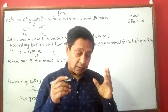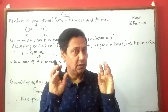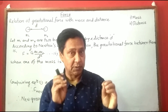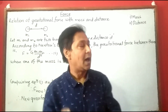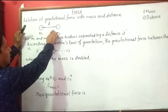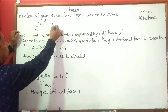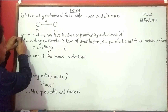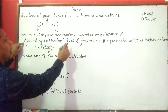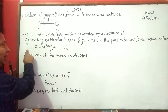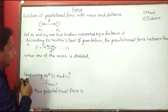Now let's create one numerical problem or derivation question: what will be the effect on the gravitational force between two bodies when one of the masses is doubled? Remember this. In the solution, you don't have to show this diagram, but to make it clear, I made this. Let m1 and m2 are two bodies separated by a distance d. According to Newton's law of gravitation, the gravitational force between them is F = G·m1·m2 / d². This is equation number one.